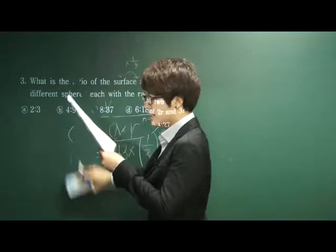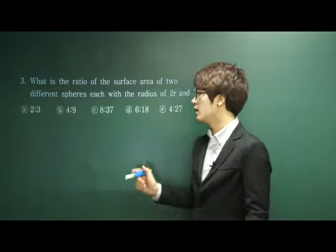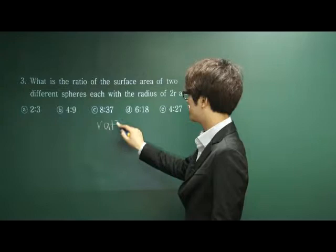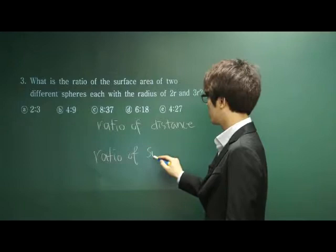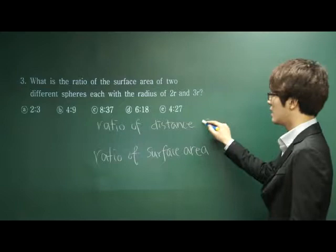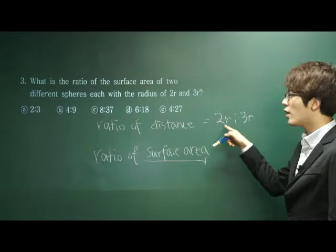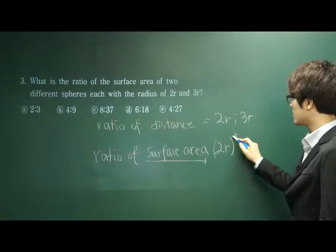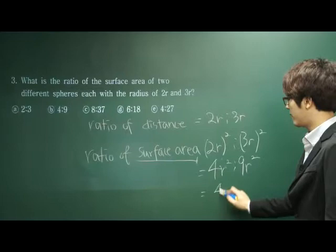Number 3 says: what is the ratio of the surface area of two different spheres, each with radius 2r and 3r? This is elementary. When finding the ratio of surface areas, the ratio of the distance was 2r to 3r. The ratio of the surface area is the square of the ratio of the distances. Therefore it becomes (2r)² to (3r)², which is 4r² to 9r², so the ratio is 4 to 9.